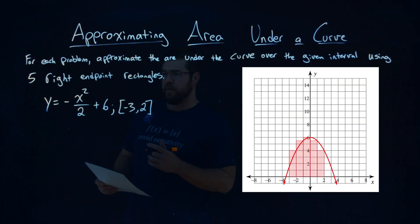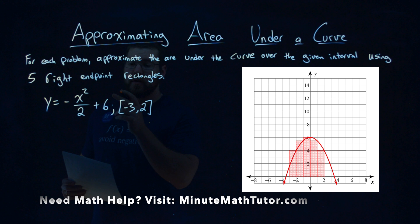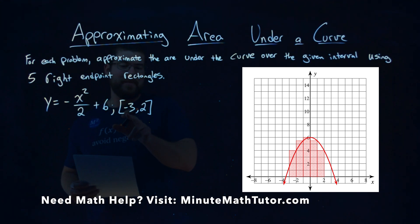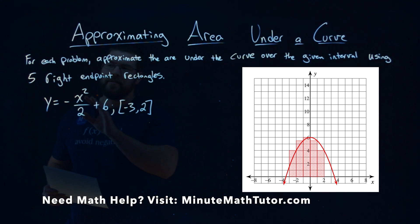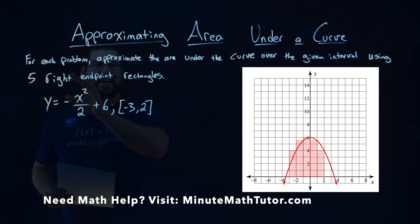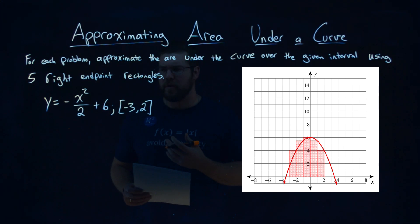We're given this problem right here: y equals negative x squared over 2 plus 6, and the interval from negative 3 to 2. We need to find five right endpoint rectangles that approximate the area under the curve.